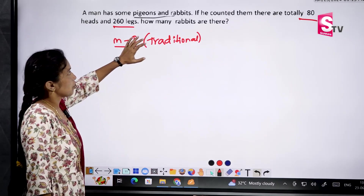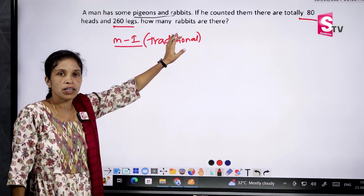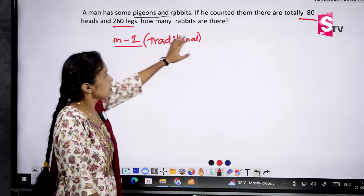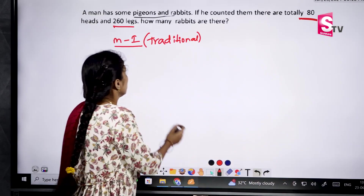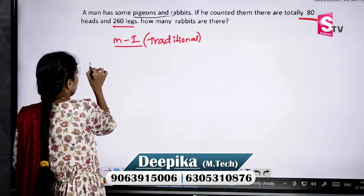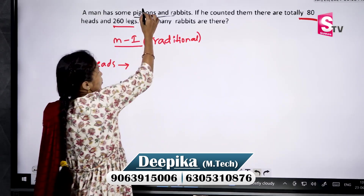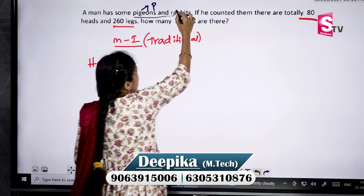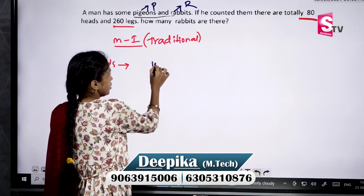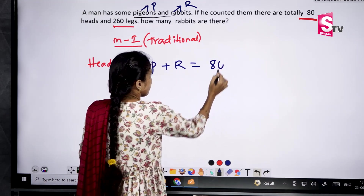In the traditional method, first write down the elements: pigeons and rabbits. For one pigeon, there is one head; for one rabbit, there is one head. So the number of heads: P (pigeons) plus R (rabbits) equals 8, which is the total heads given.